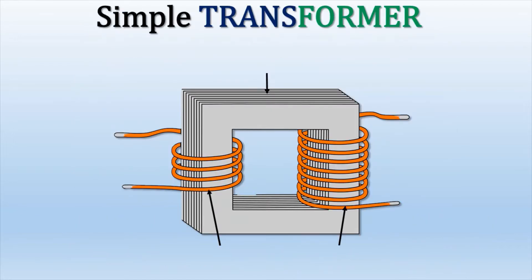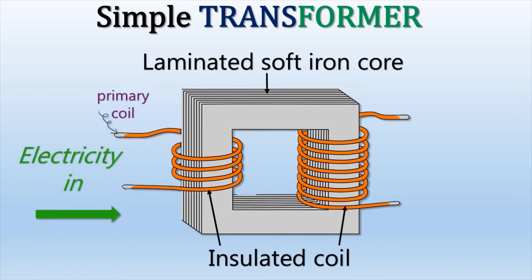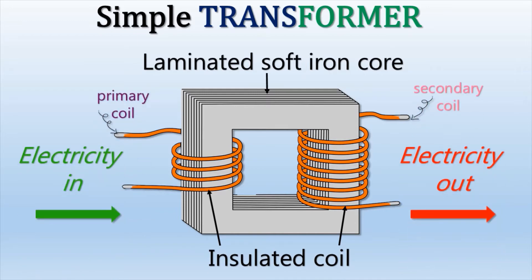A simple Transformer is made up of a laminated soft iron core, which is wrapped by two insulated coils — the primary coil on the left and the secondary coil on the right.